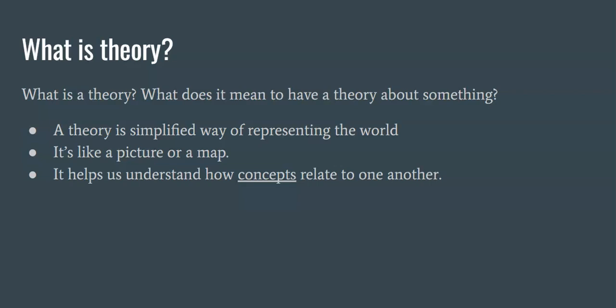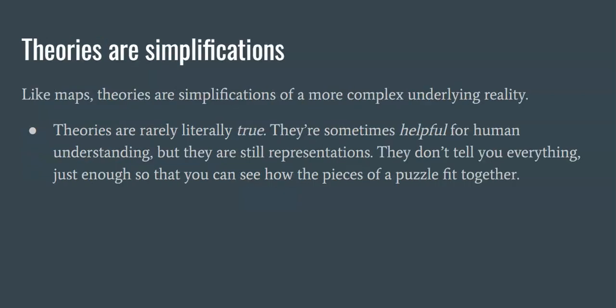It helps us understand how concepts relate to one another — not how buildings are related, or how countries are related to one another like a physical map, but how concepts relate to one another. Like maps, theories are a simplification of a more complex underlying reality. So a world map doesn't have every single detail on it, neither does a city map. They try to pick out some of the things that the people who use the map will find useful or important.